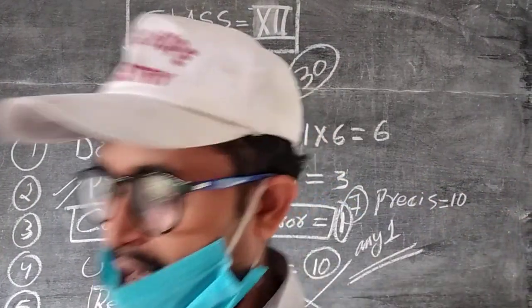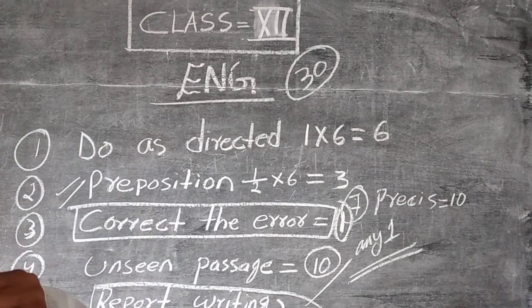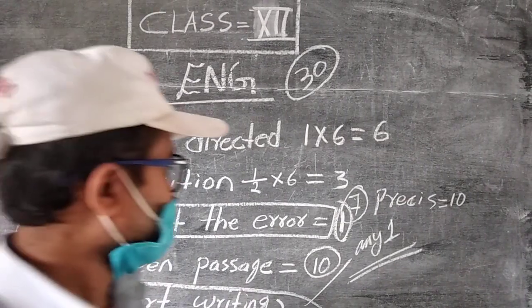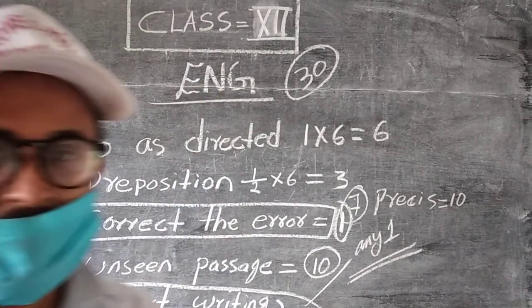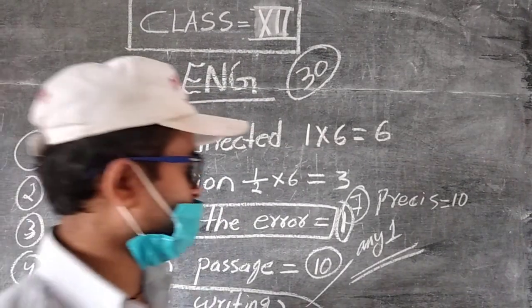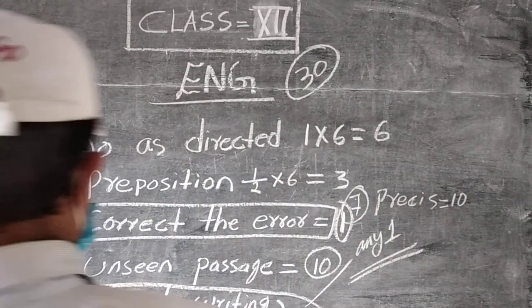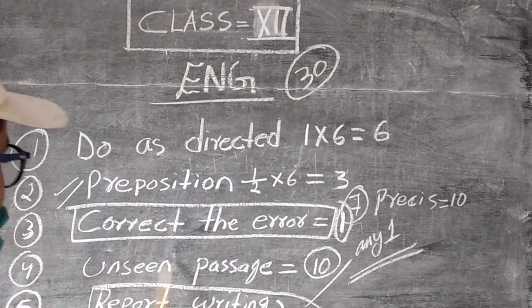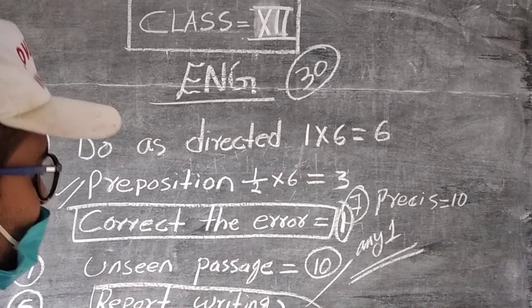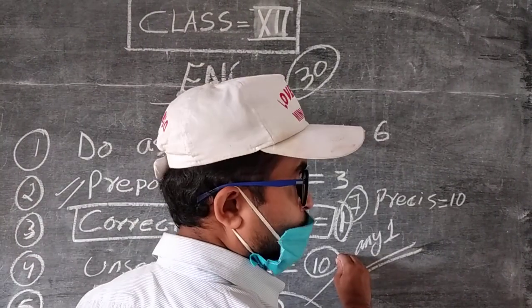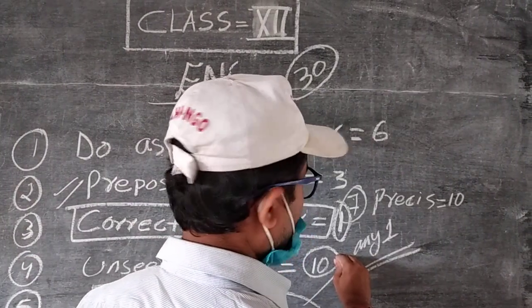Number four: one comprehension, which means unseen passage. One passage will be set there and with that passage they will be asking you five questions or four questions for six marks, and there will be fill in the blank or true or false for four marks.